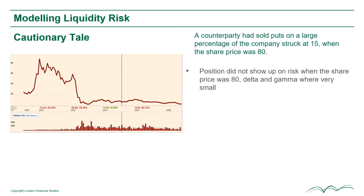So what had happened here? A counterparty had sold puts on a large percentage of the company struck at 15, when the share price was at 80. The position didn't show up on risk when the share price was 80, because the delta and gamma were very small.